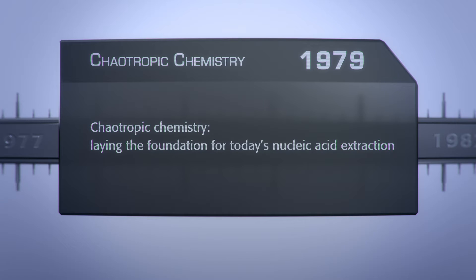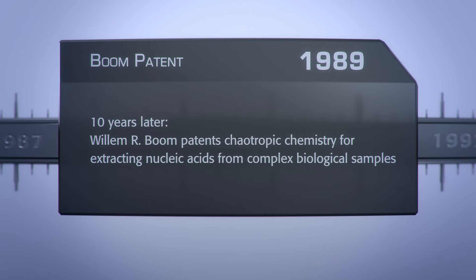Vogelstein and Gillespie achieved a breakthrough in 1979 when they developed chaotropic chemistry, the foundation for state-of-the-art nucleic acid extraction. In 1989, Willem R. Boom patented chaotropic chemistry, which continues to serve as the basis for most of today's extraction kits and uses high salt concentrations to bind nucleic acids to silica matrices.